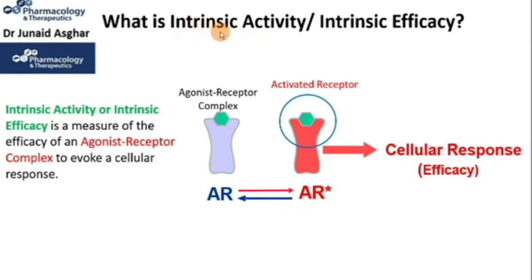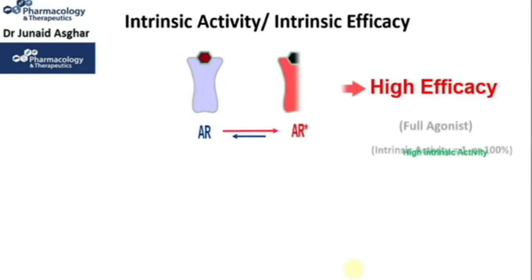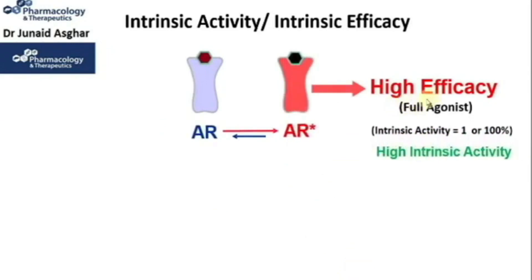Intrinsic activity or intrinsic efficacy is the measure of the efficacy of an agonist-receptor complex to evoke a cellular response, or it represents the efficacy of the agonist. If an agonist causes more activation of the receptor, it leads to higher effect or higher efficacy — we call it a full agonist. Full agonists have an intrinsic efficacy equal to 1, or 100%. The longer red arrow indicates the rate of association of agonist A to receptor R is higher than the rate of dissociation.